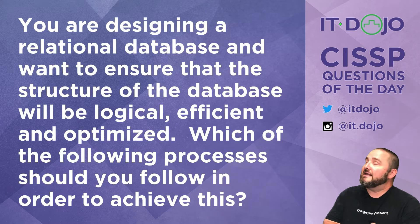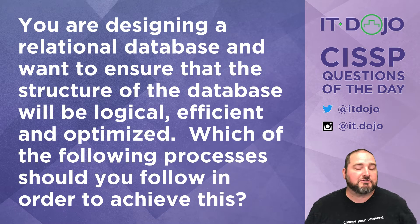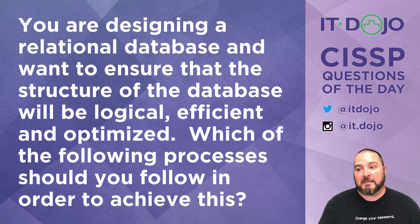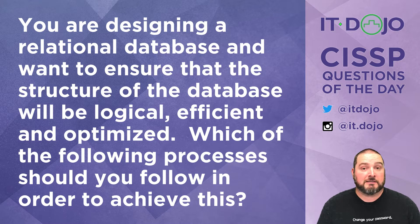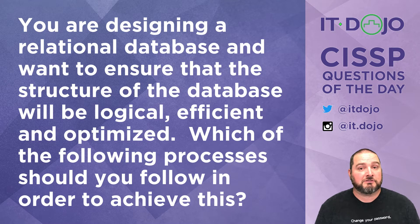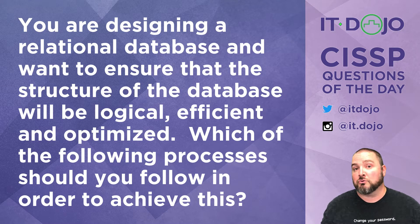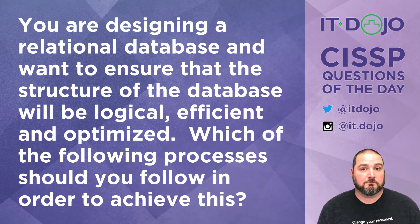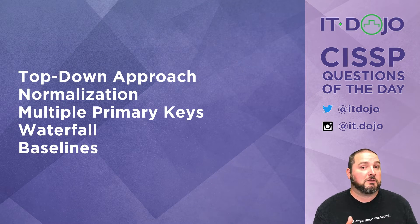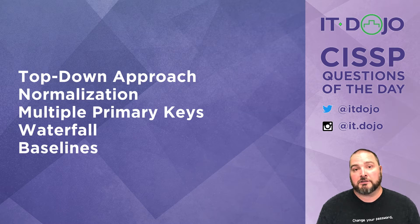Question number one today: you are designing a relational database and you want to make sure that the database you design is going to be efficient, optimized, and logical — particularly as it relates to a data integrity perspective. Which of the following should you follow or implement to help ensure that that's actually going to be true? Your answer choices are there. Click pause if you need to, think about it, and when you're ready click play and we can talk it through.